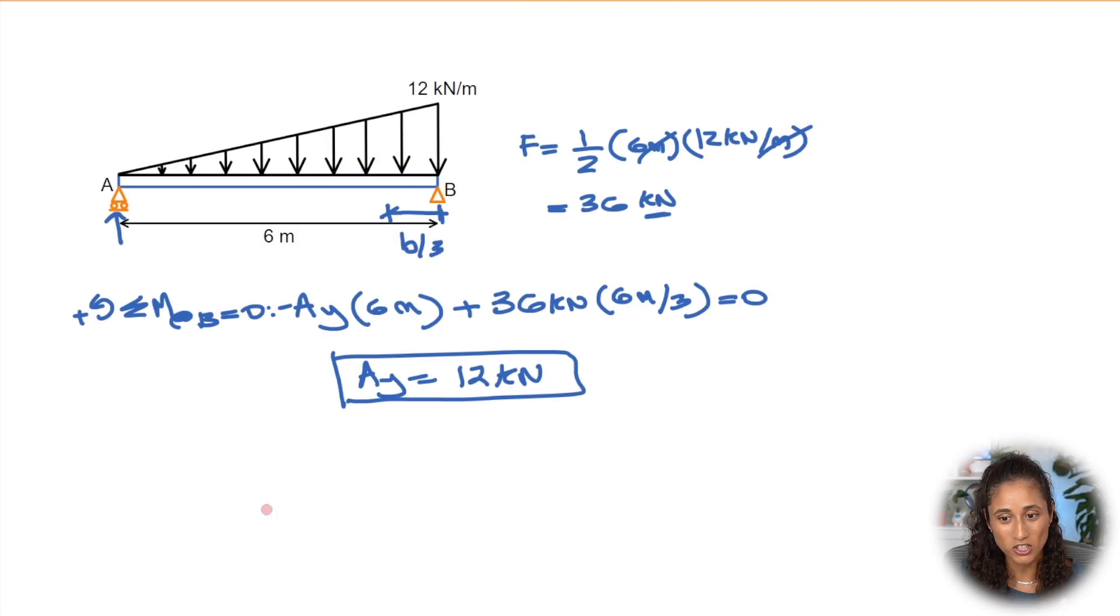One thing I forgot to mention is that Ay came out to be positive, which means our assumption is correct and Ay is going up. If we had Ay negative, that would just mean our assumption was wrong and Ay should be going down.